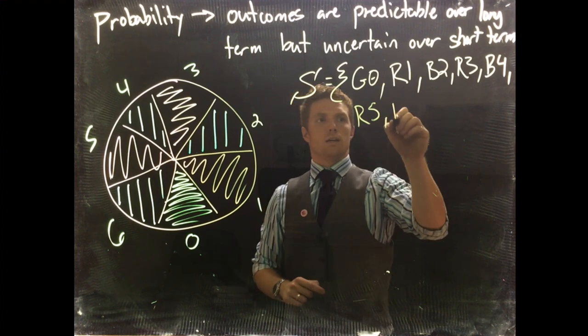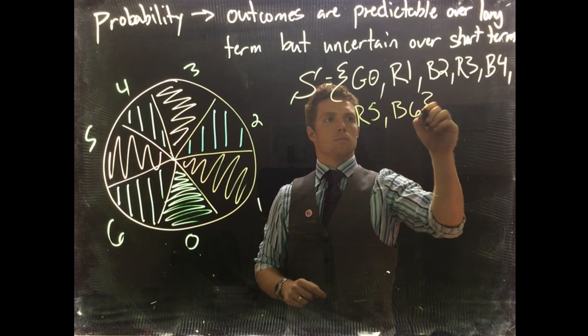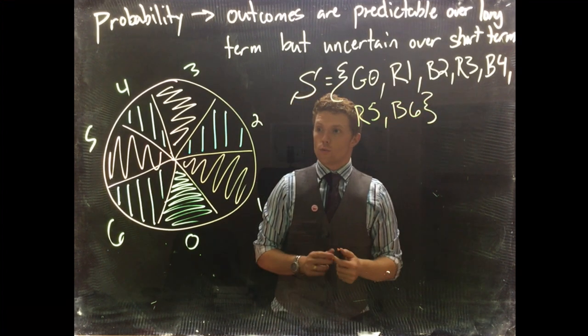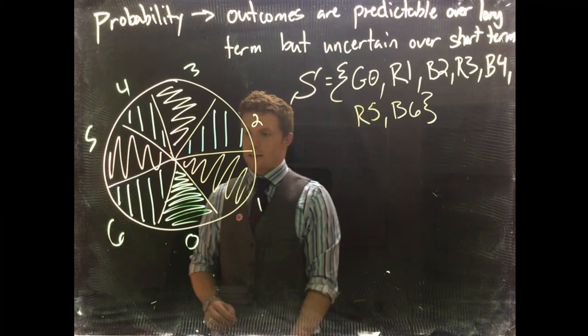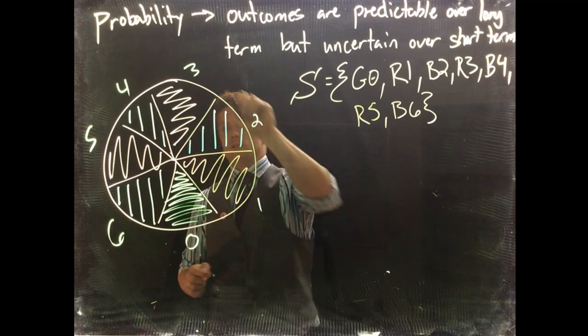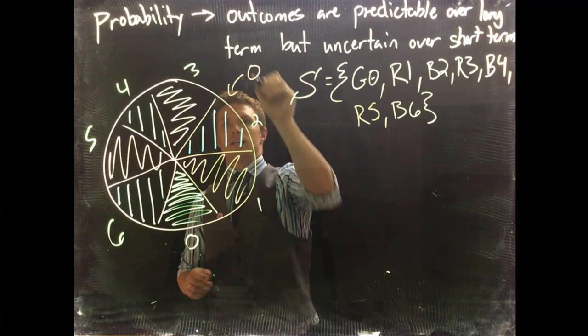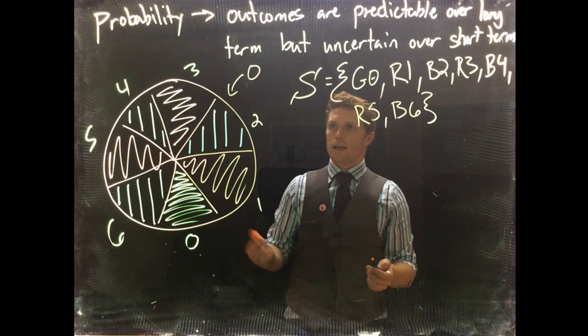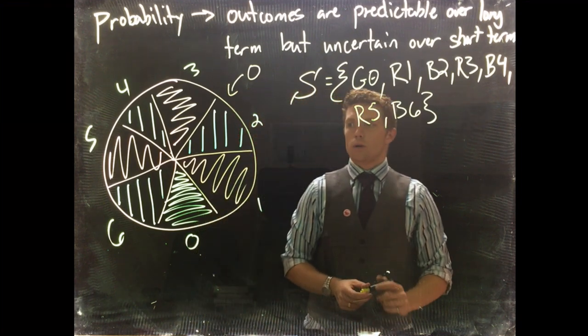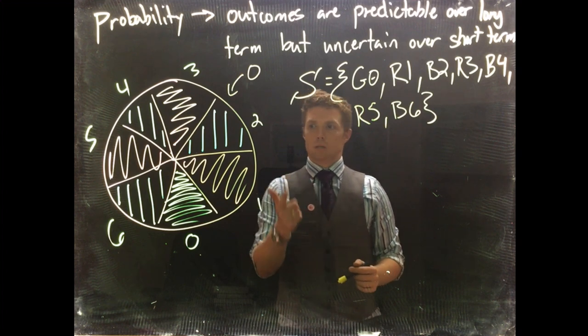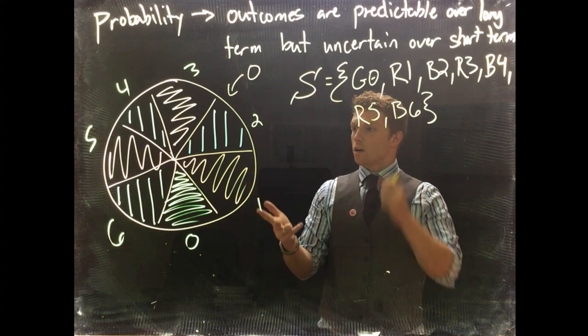We're going to have red three, we're going to have blue four, we're going to have red five, and we're going to have blue six. On this specific roulette table, you can only make bets on if our ball—so if you don't know roulette, it spins around, we throw a ball in and wherever the ball lands is the winning position.